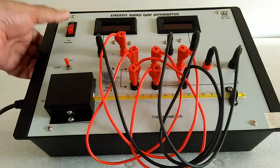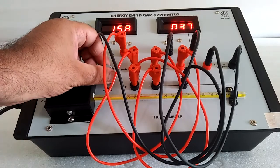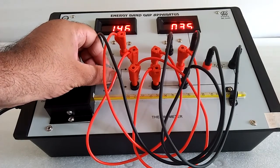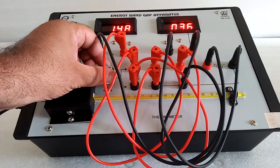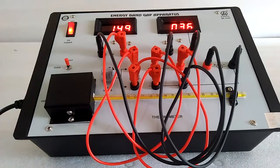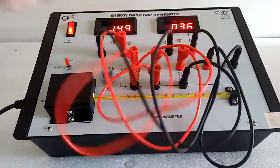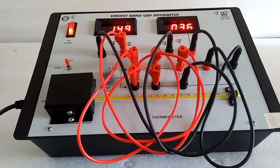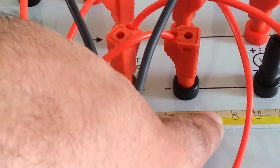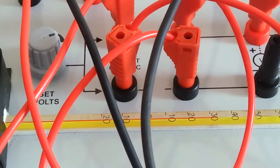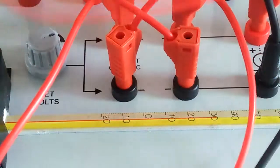Now switch on the instruments. Set the volts. Suppose 15 volts we have set. Now here is the current. Here is the initial temperature. Switch on the oven. Temperature will start increasing.